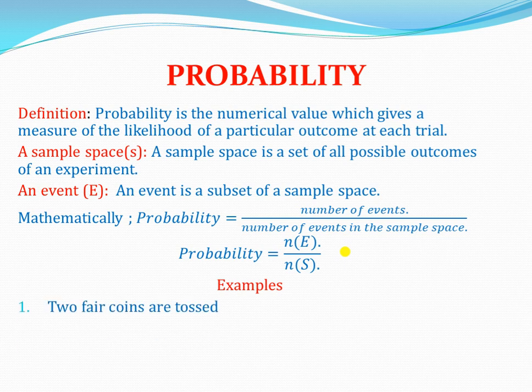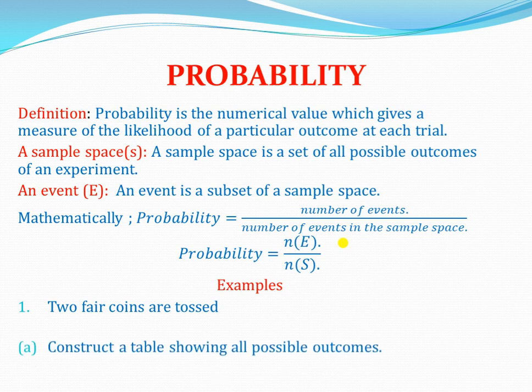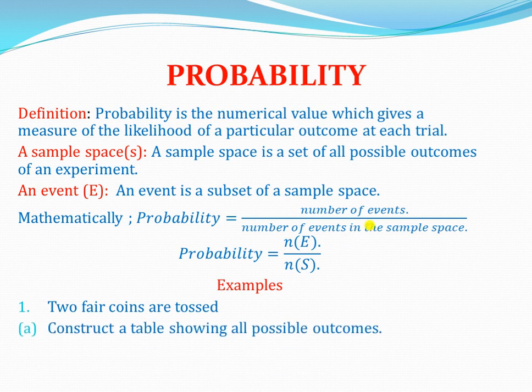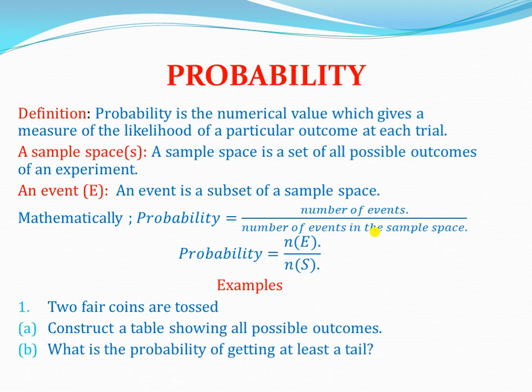Number one: two fair coins are tossed. Part A: construct a table showing all possible outcomes. Part B: what is the probability of getting at least a tail? When they say at least a tail, it means either one tail or more tails. We shall see how many tails we have from the table we construct in part A.